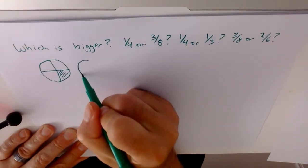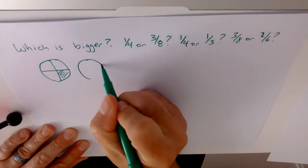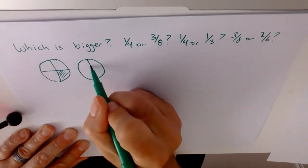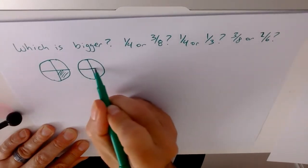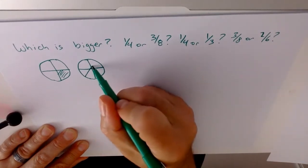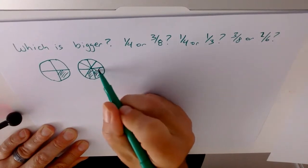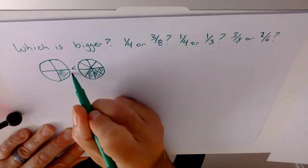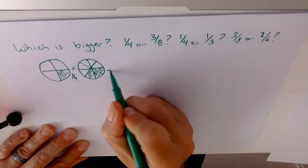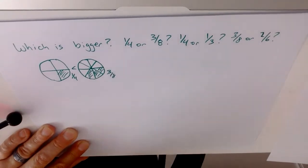Most kids have eaten a pizza, and they'll draw the circle, and they'll do their quarters, and then they'll split their quarters again. And we can see that 3 eighths is bigger than 1 quarter. No problem.